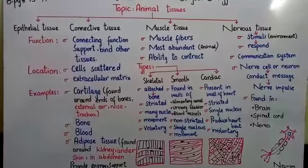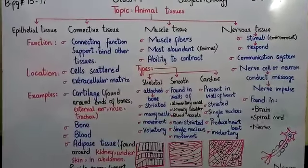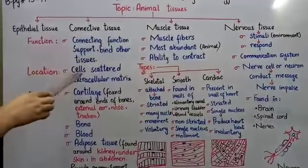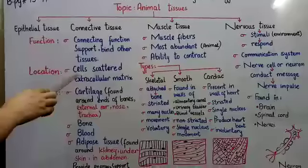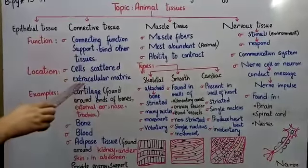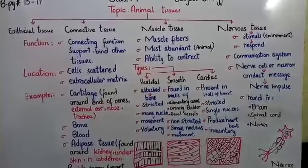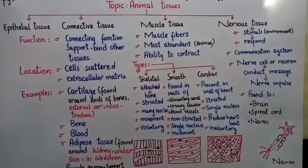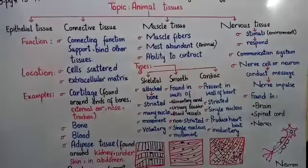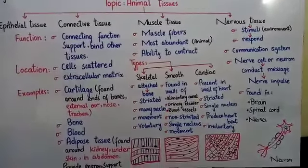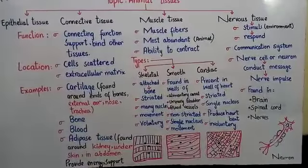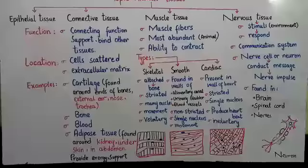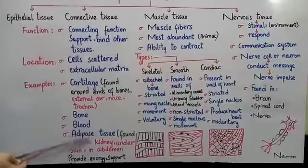Unlike epithelial tissue, connective tissue has cells scattered throughout an extracellular matrix. The tissue is basically made from cells, so the cells are scattered throughout the extracellular matrix. This is a liquid material and fluid. Extracellular means outside the cell, which is the matrix.